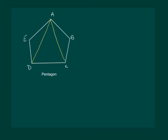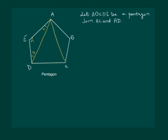Similarly, if we have a pentagon, we can draw diagonals from one of the vertices and divide the pentagon into 3 triangles, and hence calculate the sum of the interior angles of pentagon ABCDE. Let us start with triangle AED. Then angle 1 plus angle 2 plus angle 3 should be equal to 180 degrees.